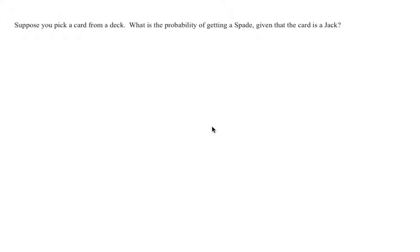In this example, we're going to do a conditional probability. We know this is a conditional probability because there's the word 'given that' in the problem. Anytime you see the word 'given that,' it is assumed to be a conditional probability.